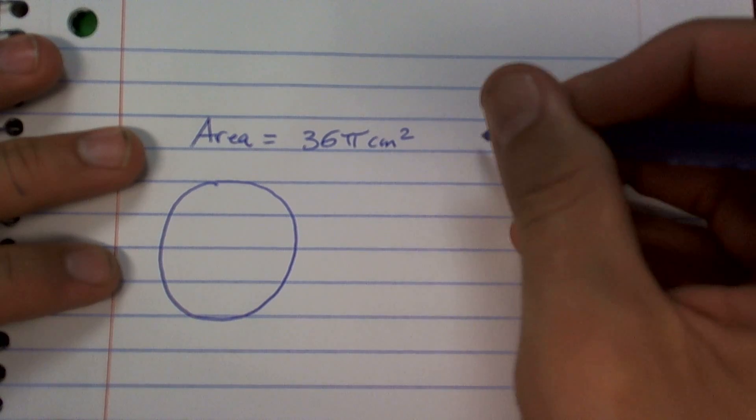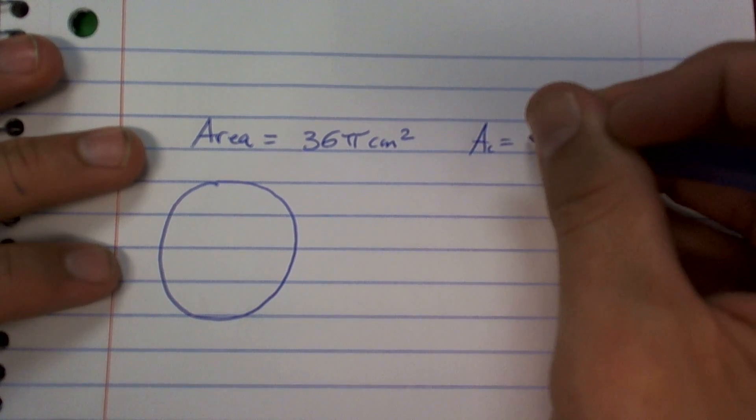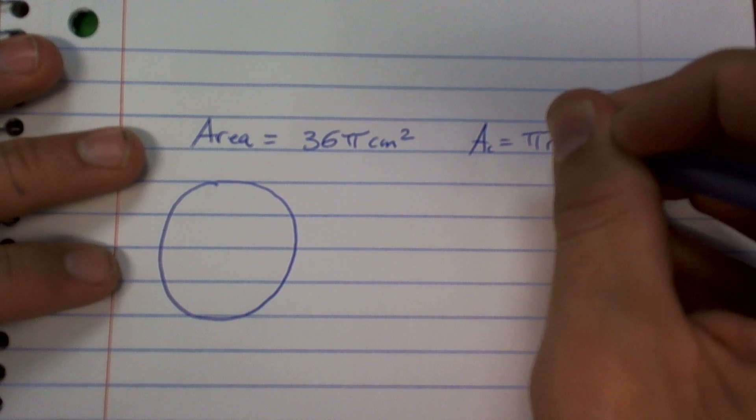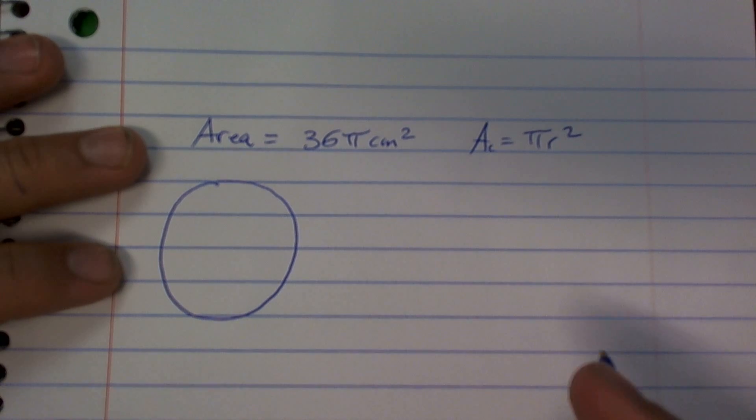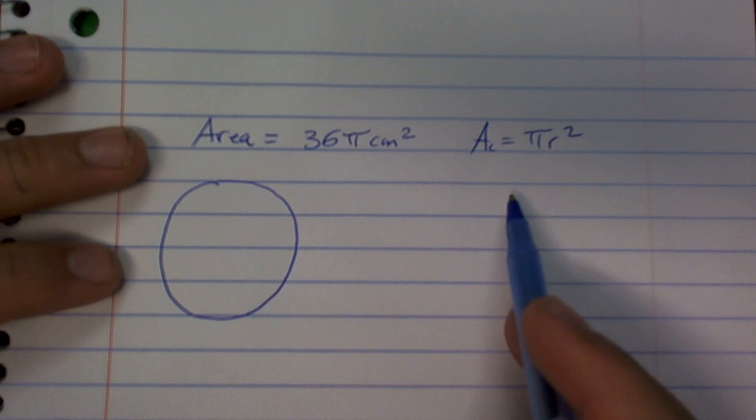They say that the area, area of a circle equals pi r squared. And what was the only other formula that we used for area? Just in circles that we've been talking about.